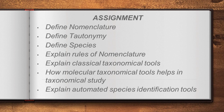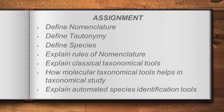Here are a few assignment questions: define nomenclature, define taxonomy, and define species. These are 2-mark or 3-mark questions. For 5-mark questions: explain rules of nomenclature, explain classical taxonomical tools, how do molecular taxonomical tools help in taxonomical study, and explain automated species identification tools. Read the book line by line, cover these questions, and we will revise after the exam. Bye and thank you.